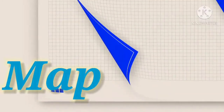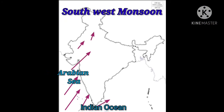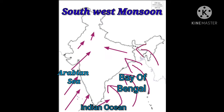Hi students, map India climate lesson. First, southwest monsoon, which has two branches: Arabian Sea and Bay of Bengal. The Arabian Sea branch flows towards the Rajasthan plain and the Bay of Bengal branch flows towards the Gangetic plain.